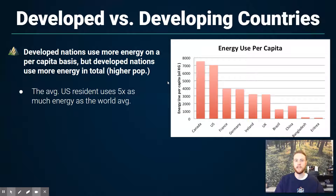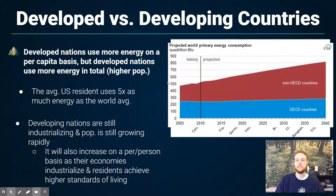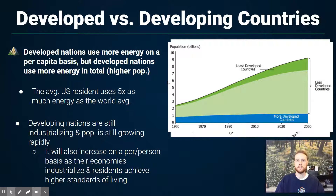We can look at this graph and see how the energy consumption of the average American compares with people in poorer nations such as China or Bangladesh. In the developing world, population is still growing and economies are still industrializing. As populations grow and economies industrialize, we'll see increasing total energy use — both rising per capita consumption and growing population size are two large factors driving huge increases in energy demand in the developing world.